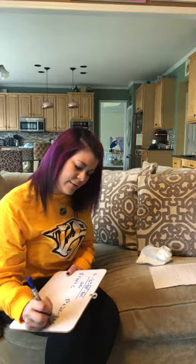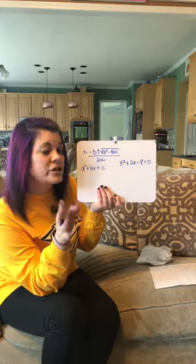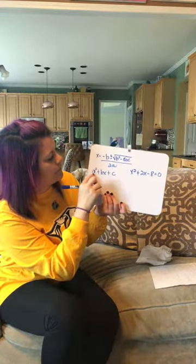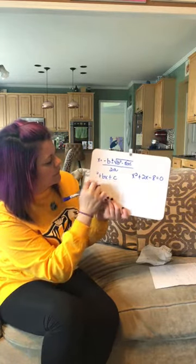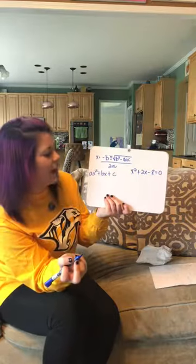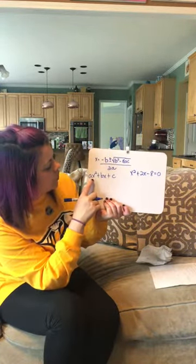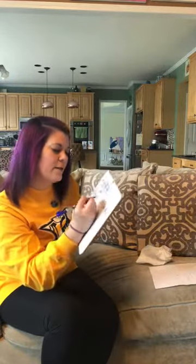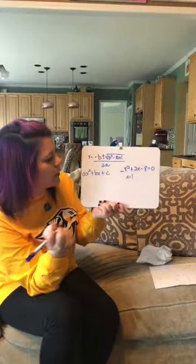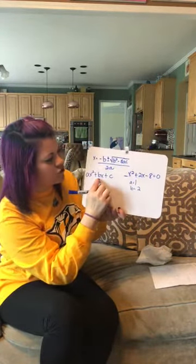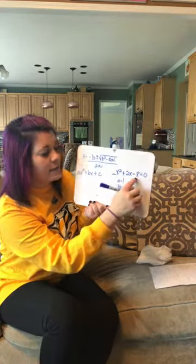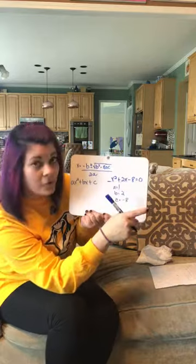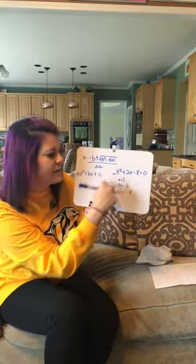For the equation x squared plus 2x minus 8 equals 0, I identify a, b, and c. There's no written coefficient in front of x squared, so a equals 1 — when there's no coefficient it's always 1. b is 2, the coefficient in front of x. c is negative 8, because the standard form has plus c, so minus 8 means c equals negative 8.